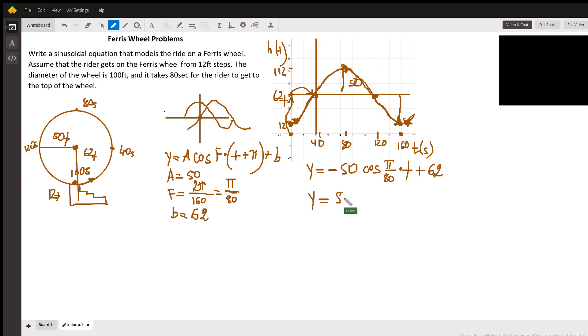Amplitude 50, sine π/80 times T - that's the frequency. But here we see a horizontal shift right. We have to remember that if we're shifting right, it's counterintuitive - we have to subtract 40 units. And there is a vertical shift by 62.